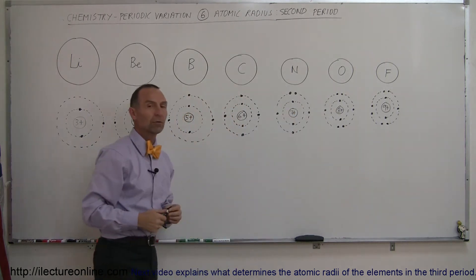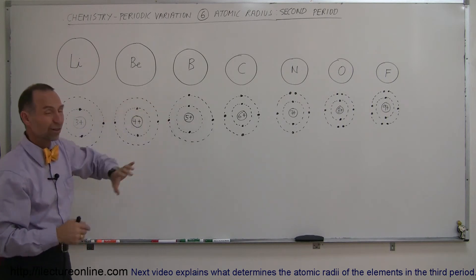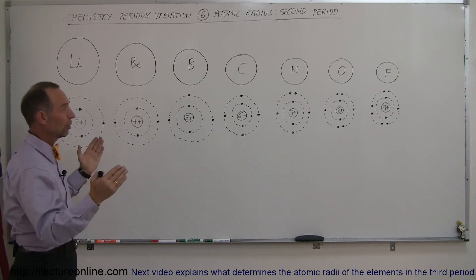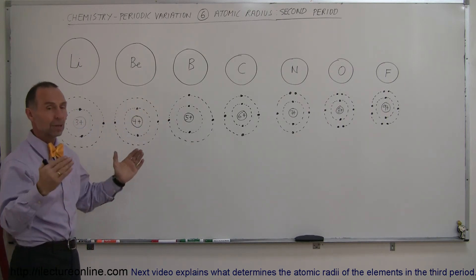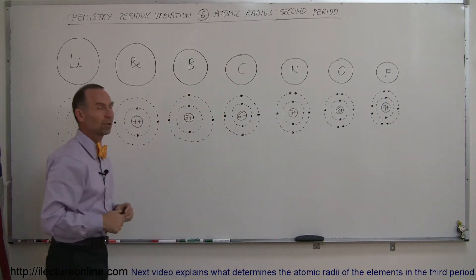The screening effect is no different for any of these atoms in the second period because it's only those two electrons that are doing the screening, and so therefore the size of the atom becomes smaller and smaller and smaller as we go further and further out on that second period.